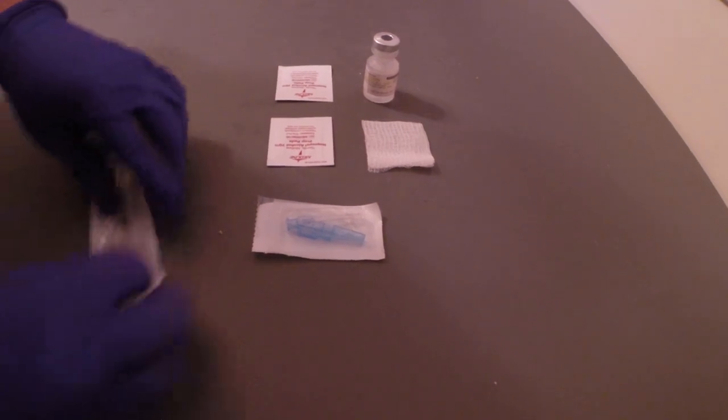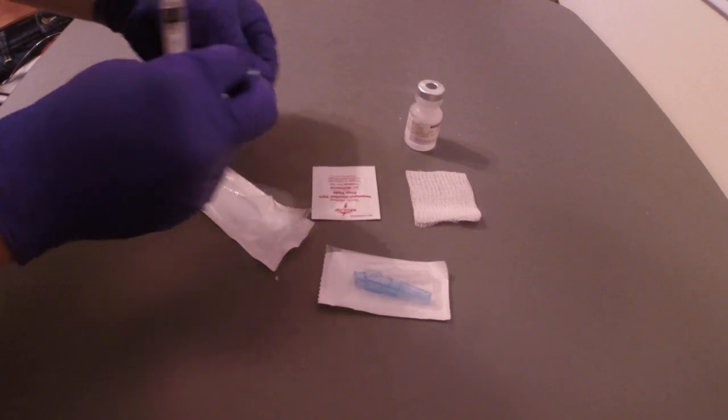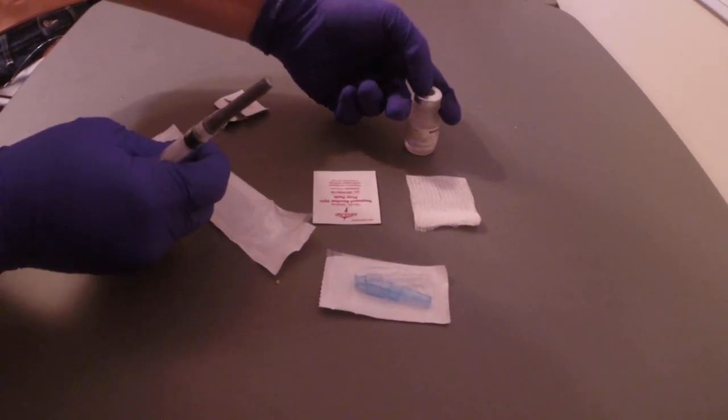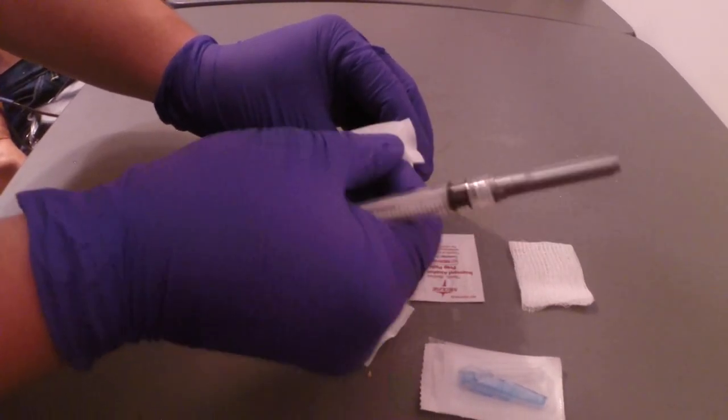So we're going to start by removing our syringe from the package which has a blunt cannula already attached. We would pop the top, the dust cap on our medication, clean the port.